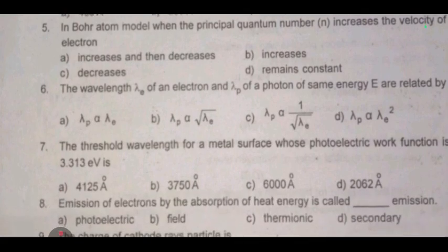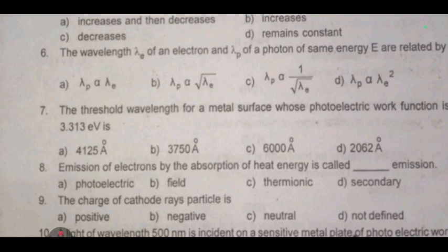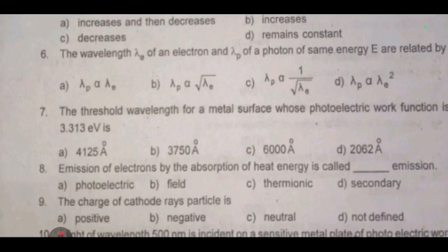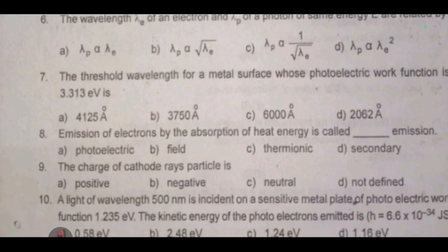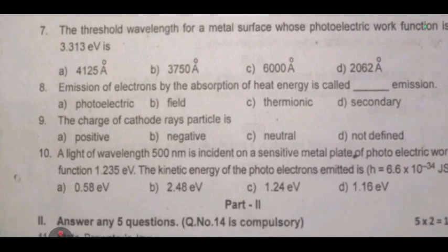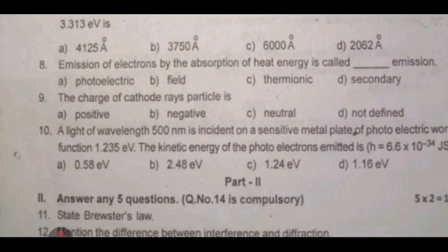Seventh, the threshold wavelength for a metal surface whose photoelectric work function is 3.313 eV is. Eighth, emission of electrons by the absorption of heat energy is called emission. Ninth, the charge of cathode rays particle is. Tenth, a light of wavelength 500 nanometer is incident on a sensitive metal plate of photoelectric work function, the kinetic energy of the photoelectrons emitted is.